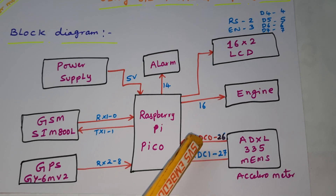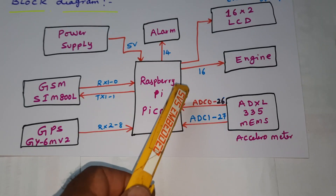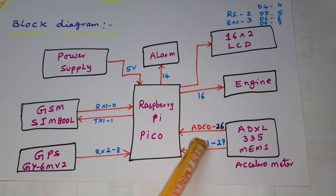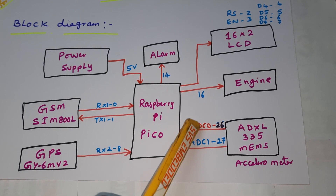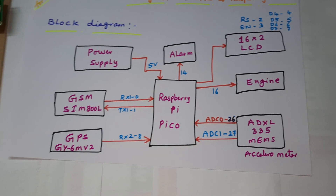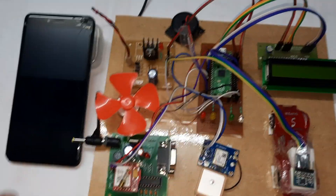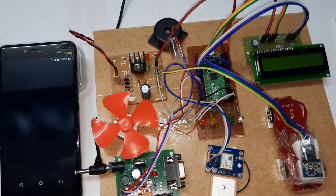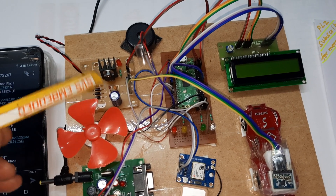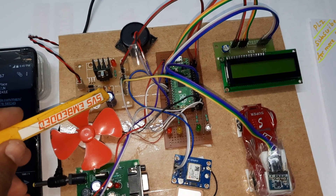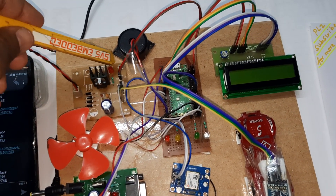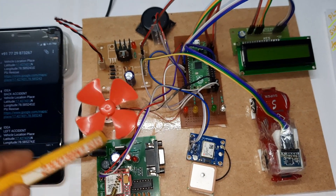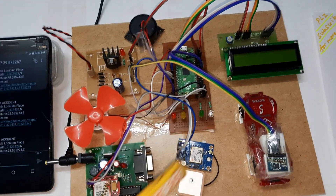The engine is connected to GPIO pin 16, and the ADXL335 MEMS accelerometer sensor ADCs are connected to GPIO 26 and 27. Now for the hardware part: there is a bridge rectifier, filter capacitor, 7805 regulator, and one LED power supply module. The engine is connected to GPIO 16.